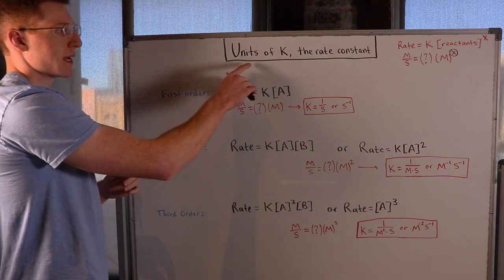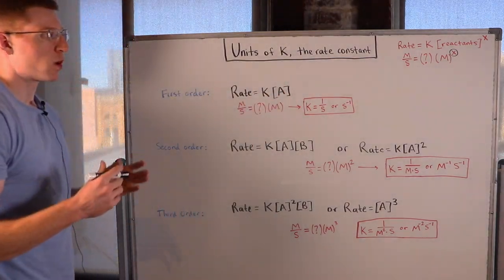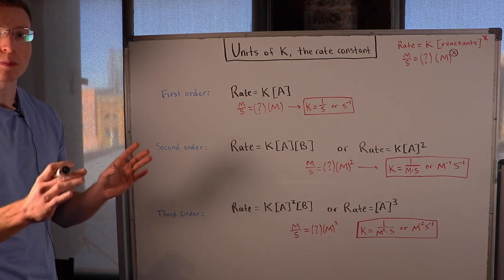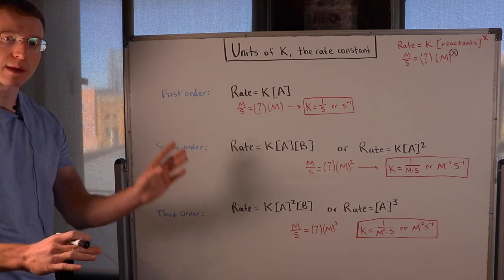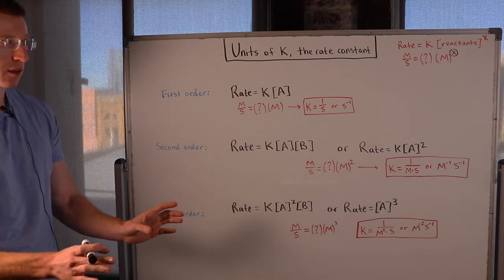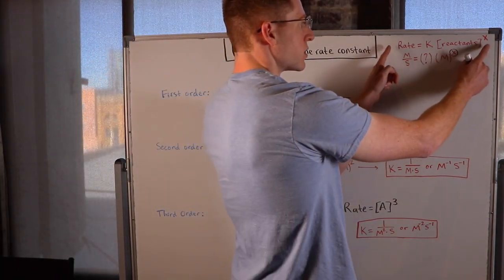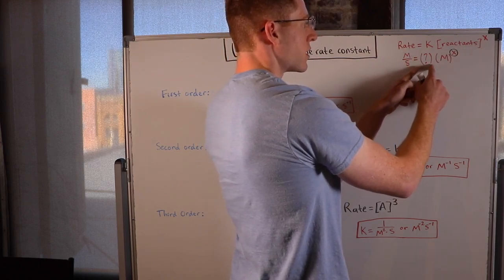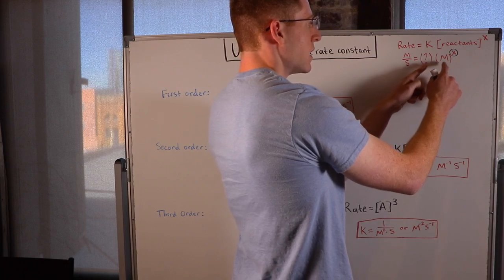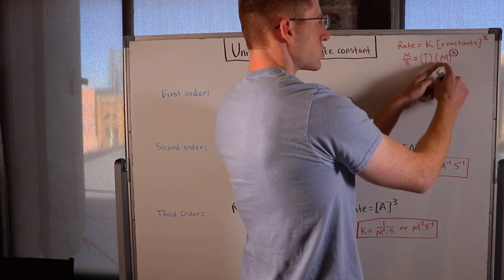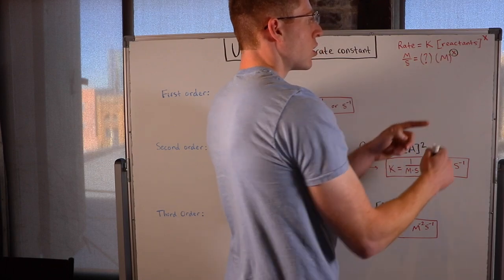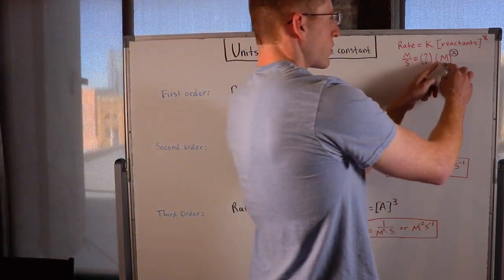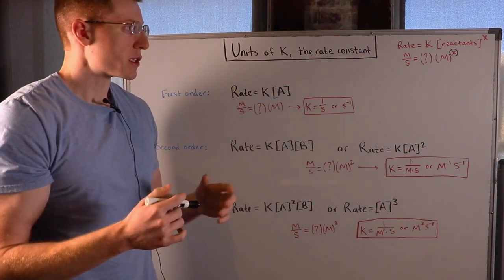I'm going to show you how you find the units of K, the rate constant. One fundamental principle you have to understand is that units have to be equal on both sides of an equal sign. We know that an overall rate law equation looks like this in general, where the rate is in molarity per second, K has unknown units that we have to find, and we multiply that by the concentration of the reactants in molarity to some overall order of the reaction. This overall order X really determines the units of K.